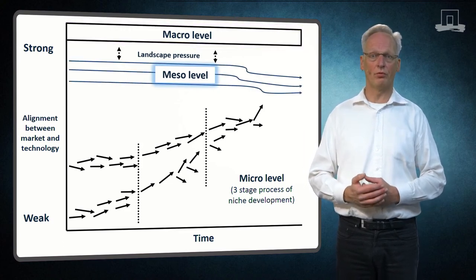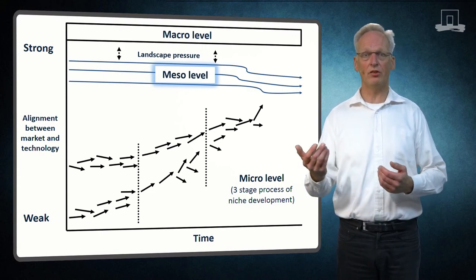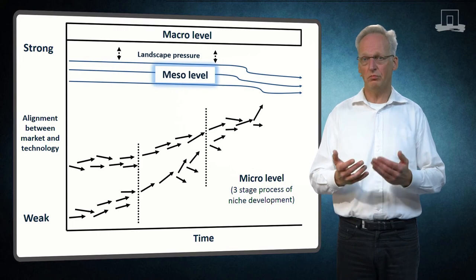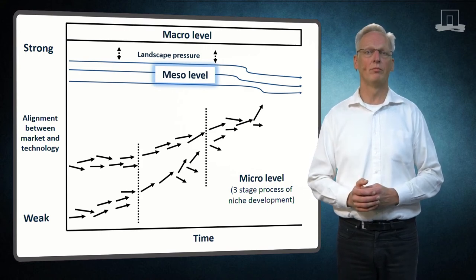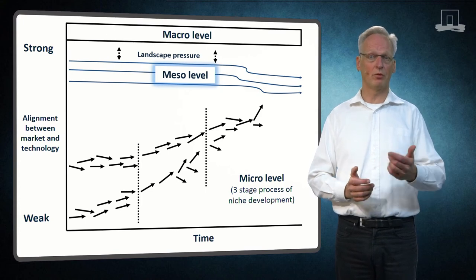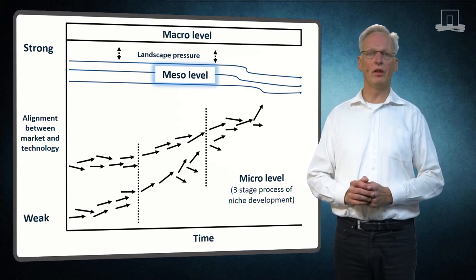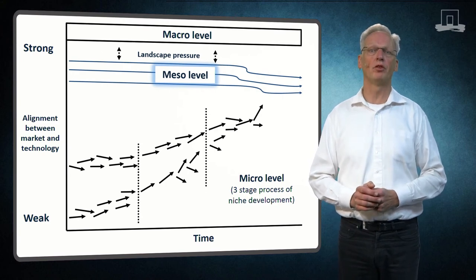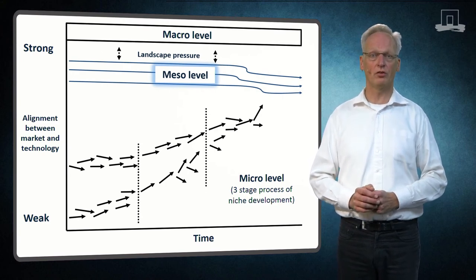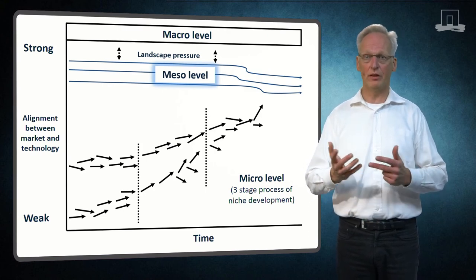Regimes composed of groups of actors which share routines, perceptions, and have stabilized and incorporated rules that are specific for a particular regime. Examples are the energy regime, the petrochemical regime, and the agri-food regime. While working routinely according to common perceptions, technology designs, market structures, and exchange relationships, actors give stability to the regimes.